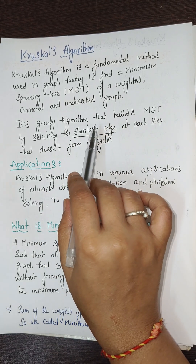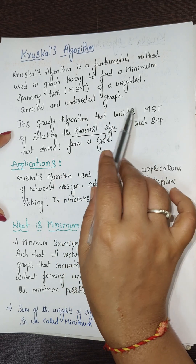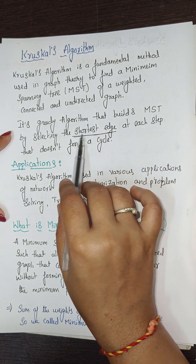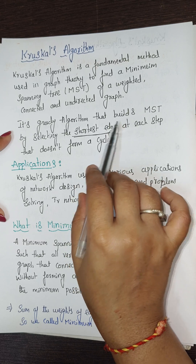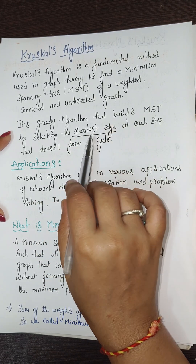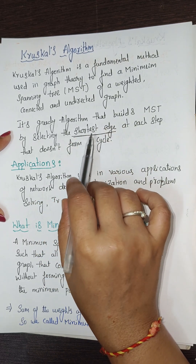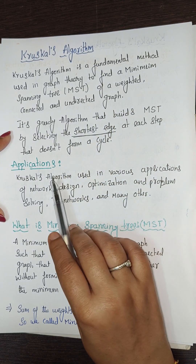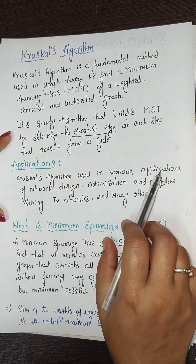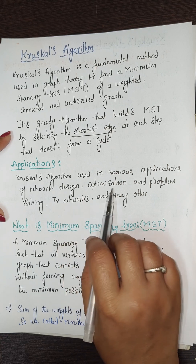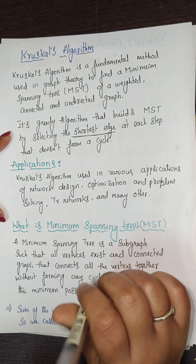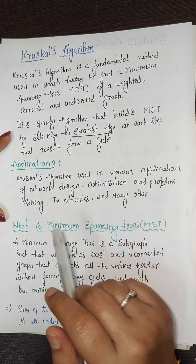At every step we select the shortest edge and check that it should not form a cycle — that condition is very important. The applications of Kruskal's algorithm include network design, optimization problem solving, TV networks, and many others.